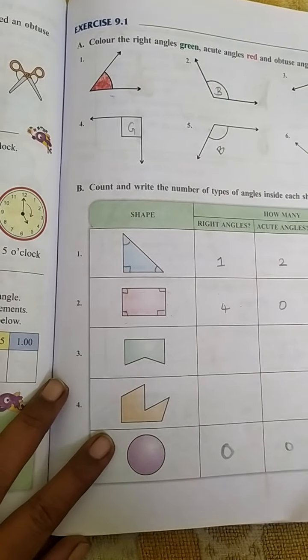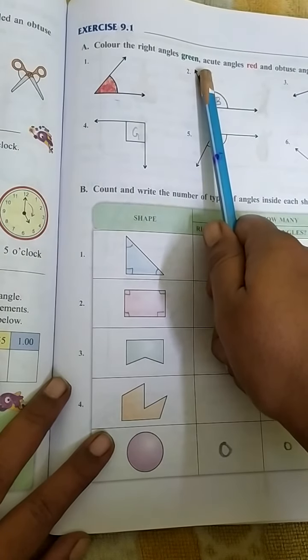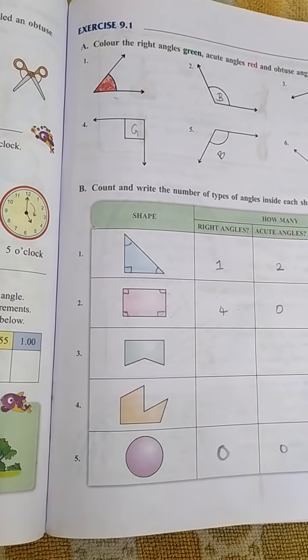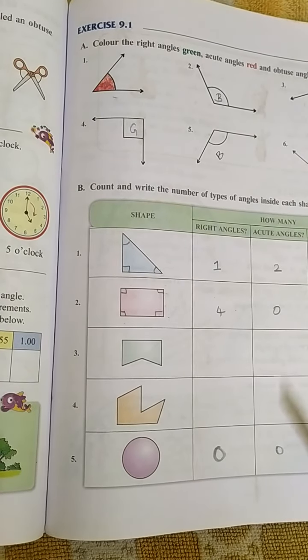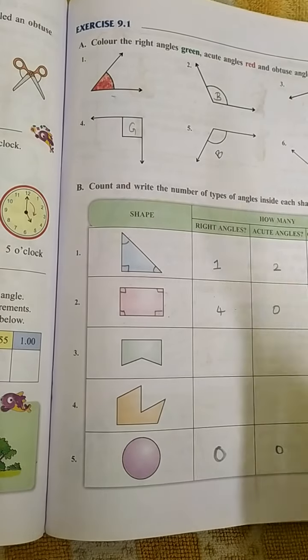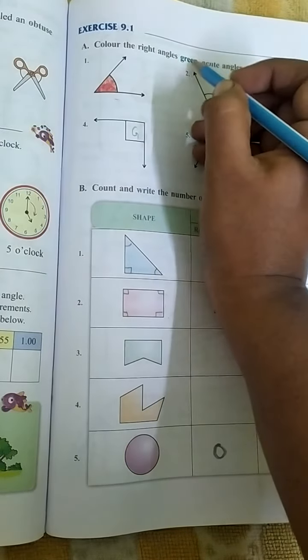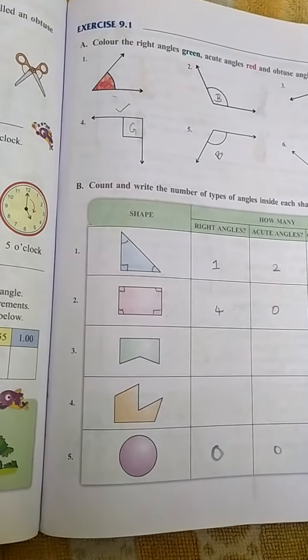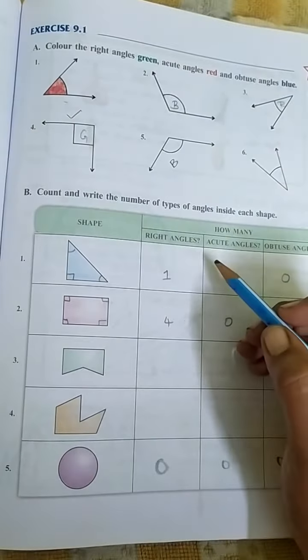Exercise 9.1. Color the right angles green, acute angles red, and obtuse angles blue. You are going to color it in your book. First we will check right angle with green. This is a right angle. Picture number 4 is a right angle. You are going to color this angle place with green.